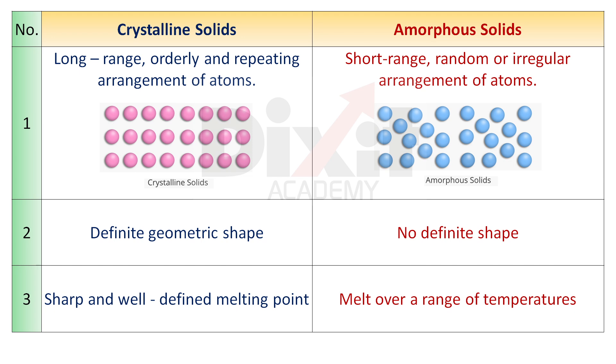Point number 2. Crystalline solids have a definite geometrical shape. Amorphous solids have no definite geometrical shape.